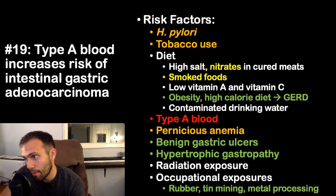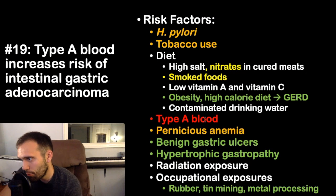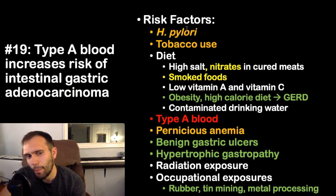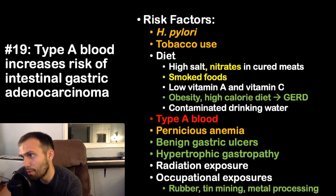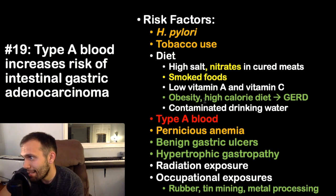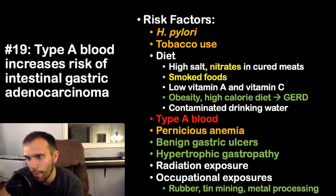Fact nineteen: type A blood increases the risk of intestinal-type gastric adenocarcinoma. Other risk factors include H. pylori infection, tobacco use, pernicious anemia, nitrate-rich/cured/smoked foods, low vitamin A and C, GERD, obesity, and a family history of gastric cancer.